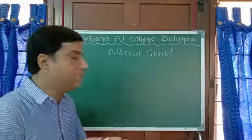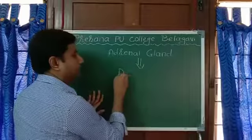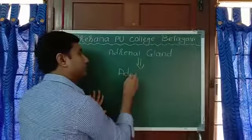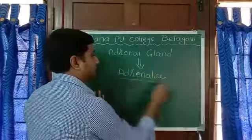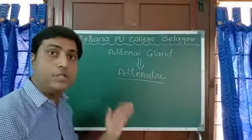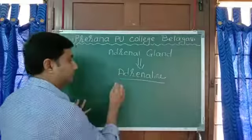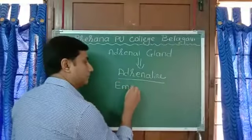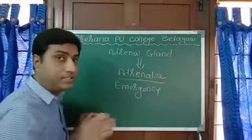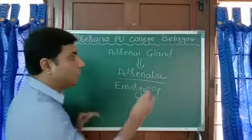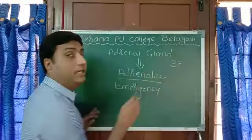The adrenal gland releases a hormone called adrenaline. This hormone is commonly called the emergency hormone. It is also called the 3F hormone.